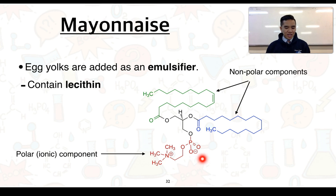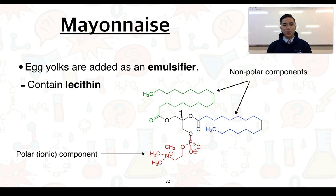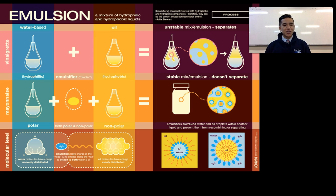Lecithin has a polar ionic component containing a positively charged nitrogen group and a negatively charged phosphate group. It also has non-polar components predominantly made up of carbons and hydrogens. The purpose of an emulsifier is to act as a bridge that allows both polar and non-polar components to mix with one another without separating.